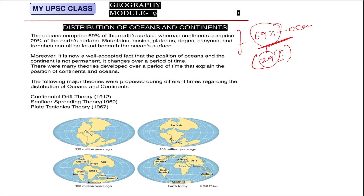Now, looking at today's map and globe, we have seven continents: Asia, Australia, Africa, Europe, South America, North America, and Antarctica. This is the configuration of today's earth.